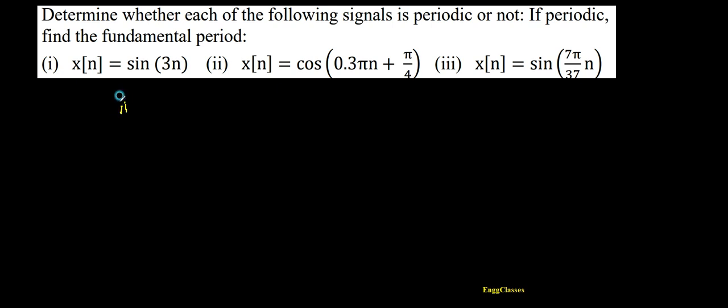Let me consider the second numerical, wherein x(n) is given as equal to cosine of 0.3nπ plus π/4. Is the signal periodic or not? If periodic, we need to find its fundamental period.